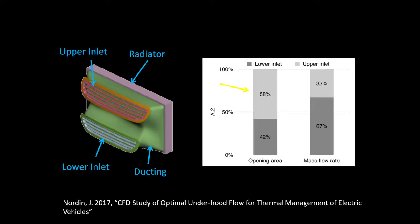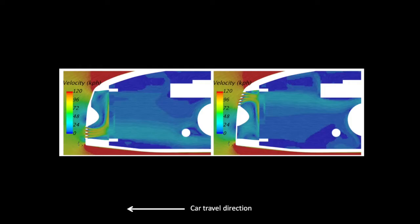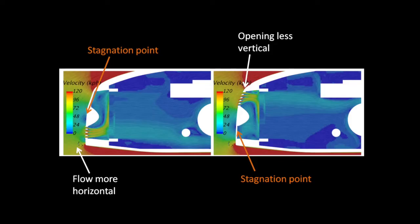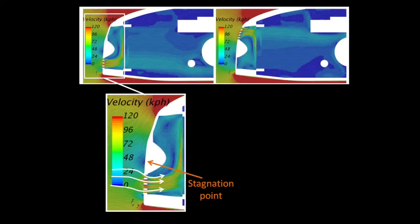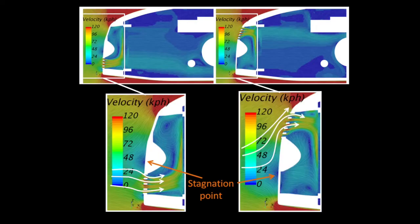Here we have a good example of this. Whilst the upper inlet makes up 58% of the total opening area, it only contributes 33% of the mass flow rate. This CFD slice paints a pretty clear picture of what's going on. The first thing that stands out is the upper opening is less vertical, and therefore less aligned with the airflow. If we zoom in, we can see that the stagnation point is quite close to the lower grill, and is helping to further align the airflow with the grill. It's almost channeling it in. Whereas on the upper grill, the air hits the front of the car, turns 90 degrees upwards, and then needs to turn another 90 degrees to get into the grill. Clearly the air is less aligned.